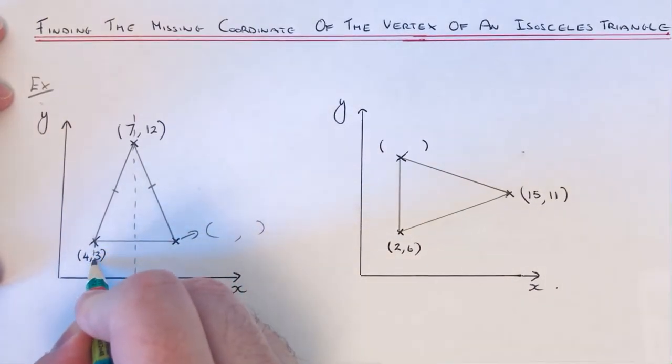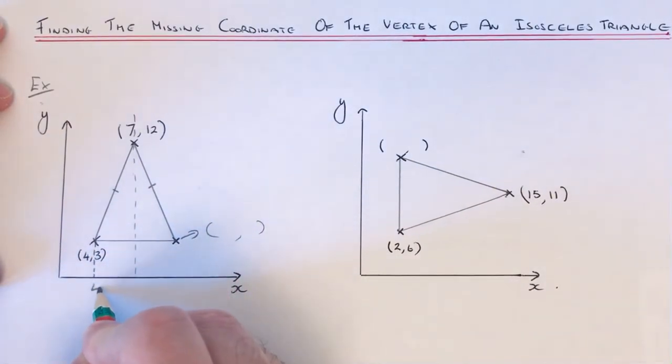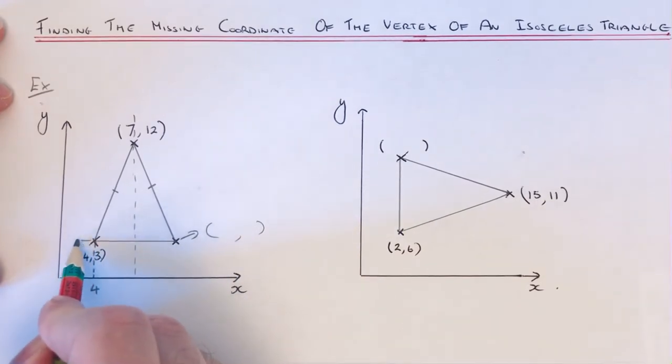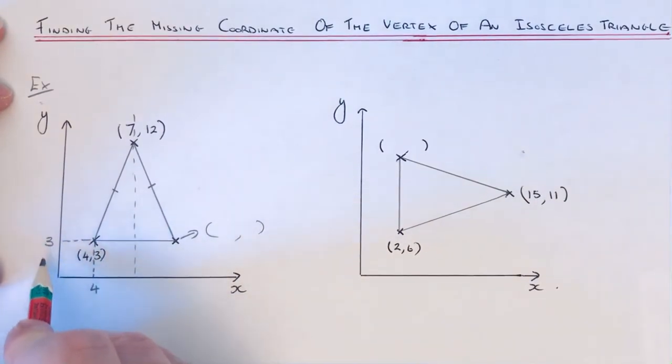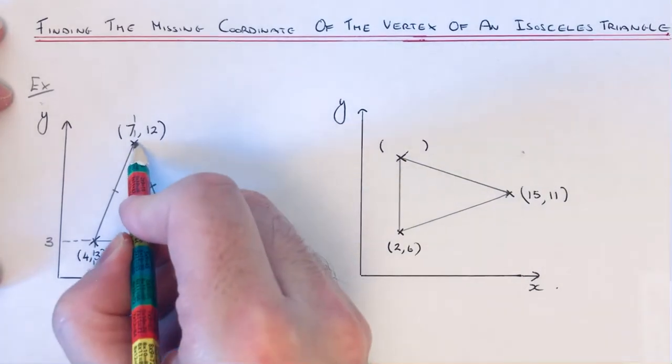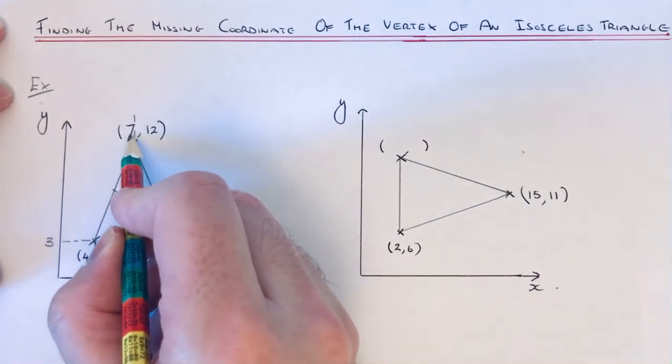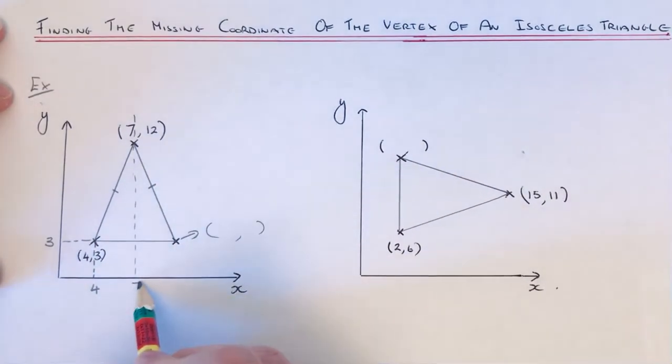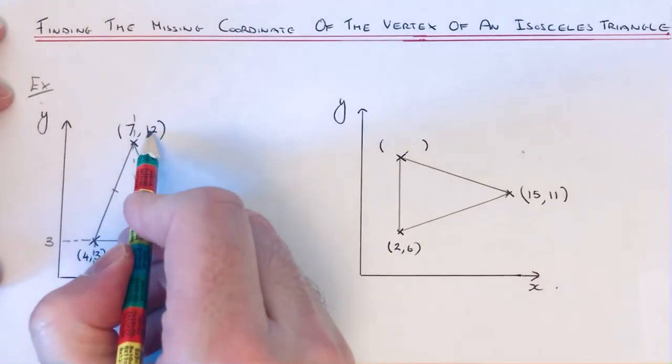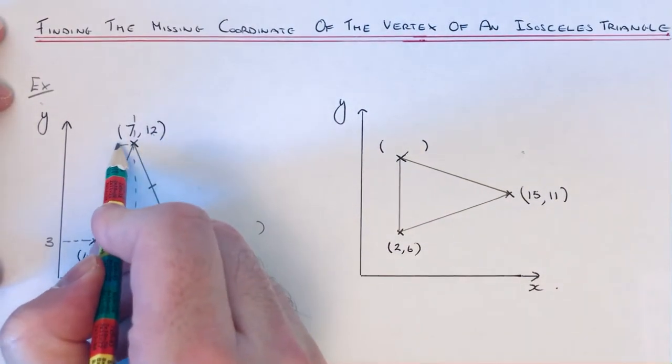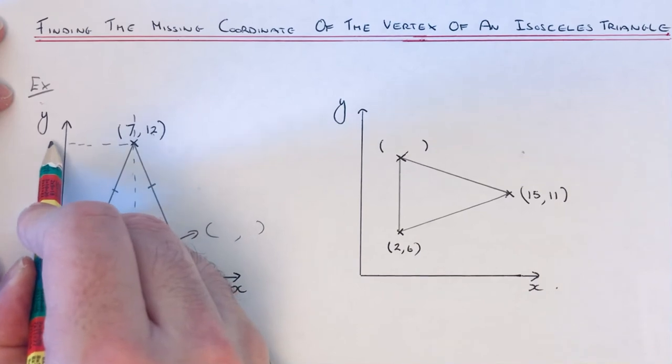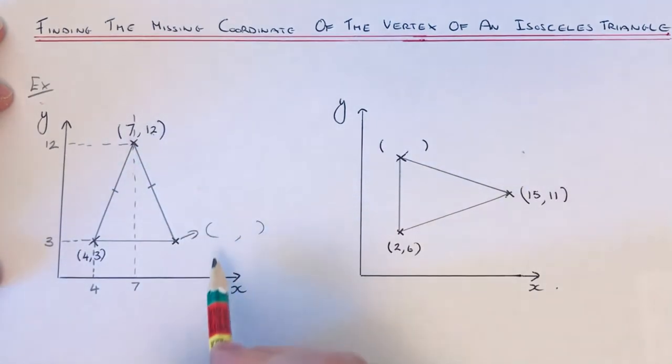The first number of our coordinate will go on the x-axis, and the second number, three, will go on the y-axis. Do the same for this coordinate here. The first number, seven, will go on the x-axis, and the second number, twelve, will go on the y-axis. Now we need to find out what this coordinate is here.